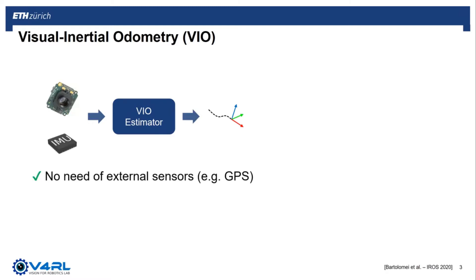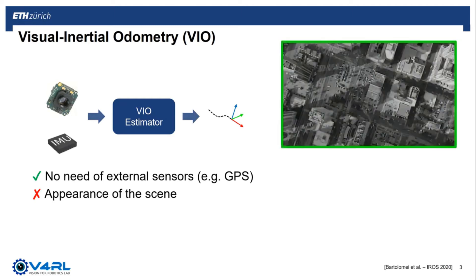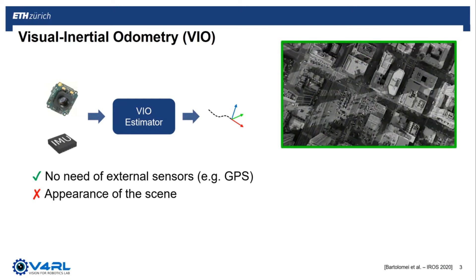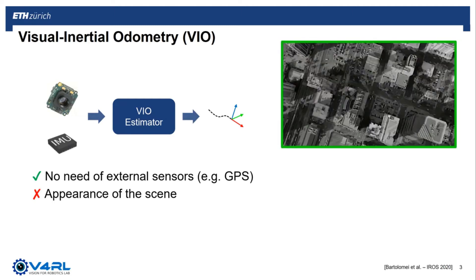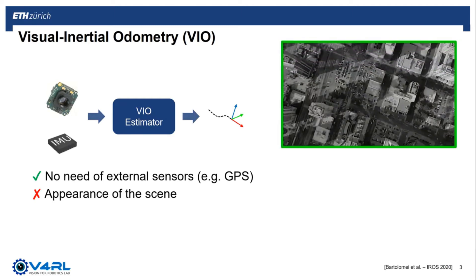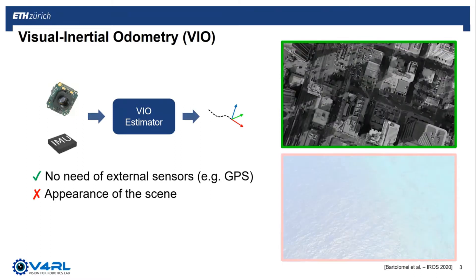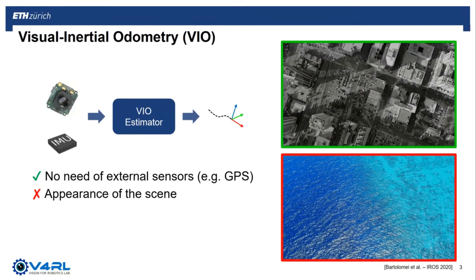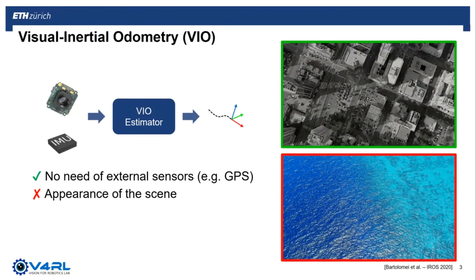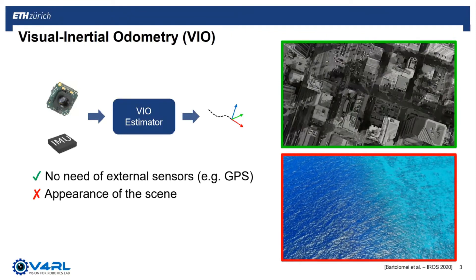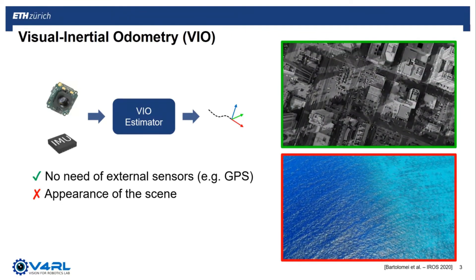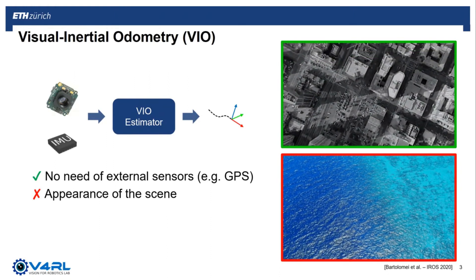However, the performance of VIO strongly depends on the visual appearance of the scene. For example, the images captured by flying on top of buildings have enough texture for camera-based estimators, and in this case VIO can give a satisfactory performance. Instead, bad visual appearance can bring complete failure in the pose estimation process, for example in the presence of shiny specular surfaces such as water, or in dynamic scenes.